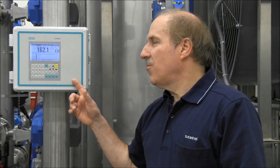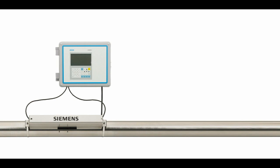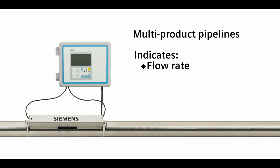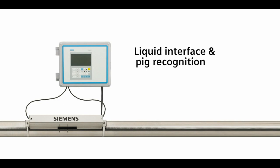Hi, I'm John Aparo, Senior Applications Engineer for Siemens Clamp-On Ultrasonic Flow Meter Products. And this is the Sitrans FUH-1010 Hydrocarbon Liquid Flow Meter. The FUH-1010 has the unique ability to measure multi-product pipelines, simultaneously indicating flow rate, identification of the flowing product, dynamic density and viscosity measurement, plus liquid interface and PIG recognition, all from outside the pipe.